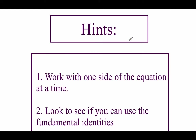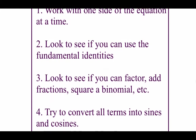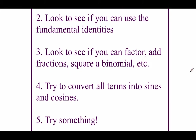As we're going through verifying these trig identities, here are some helpful hints or tips we can use along the way. Number one, we always want to work with one side of the equation at a time, meaning we're not allowed to move things from the left side to the right side or vice versa. Number two, we're going to look to see if we can use any of our fundamental trig identities to help us simplify or rewrite things. Number three, we're going to look to see if we can factor, add fractions, or square a binomial or anything along those lines.